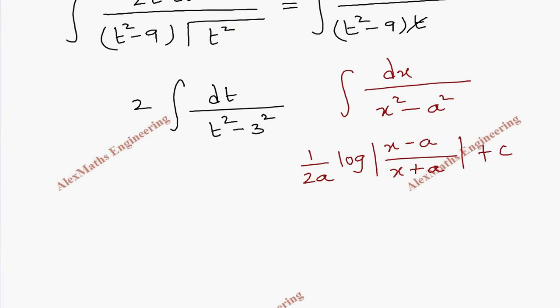Wherever x is there, we are going to substitute t. Let's write the formula itself. Already, there is a 2 outside. Now, 1 by 2a, where a is 3, into log mod (t minus 3)/(t plus 3) plus c. I can cancel these two.